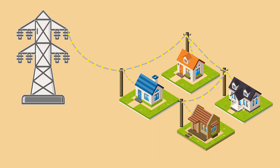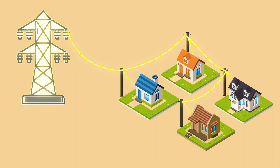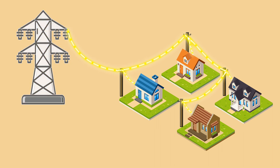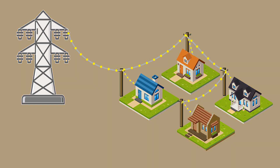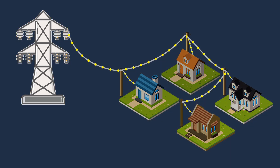It costs the electric company more to create and maintain the equipment required for high usage. To combat this, electric companies use demand charges to encourage customers to shift power use to off-peak hours.